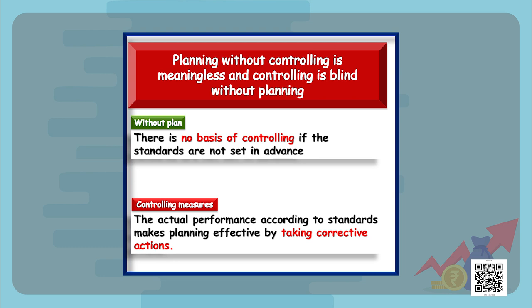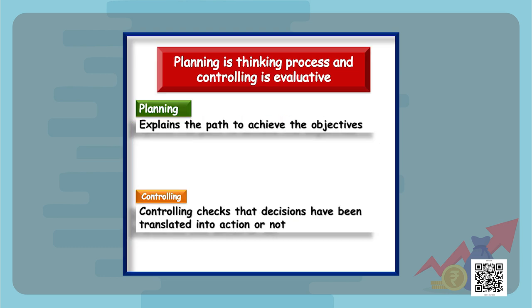Planning without controlling is meaningless, and controlling is blind without planning. Without planning there is no basis of controlling — if standards are not set in advance. But with planning, actual performance can be measured and effective steps can be taken. Planning is a thinking process whereas controlling is evaluative — planning explains the path to achieve objectives, whereas controlling evaluates whether those objectives have been achieved or not.